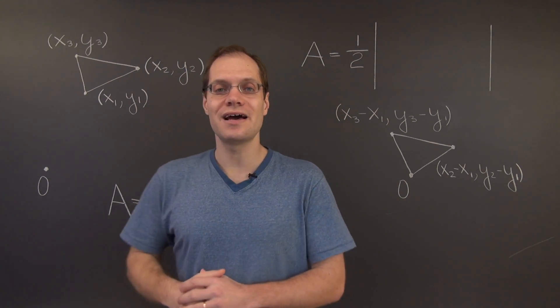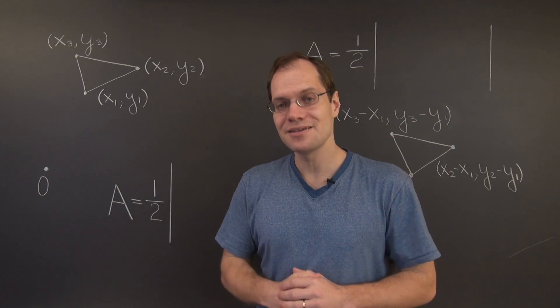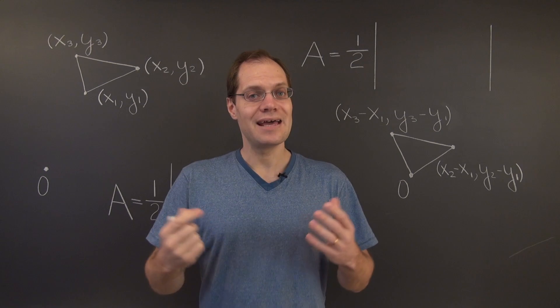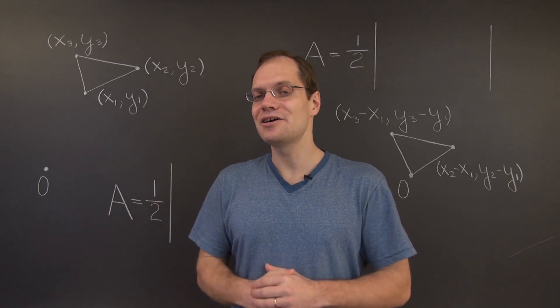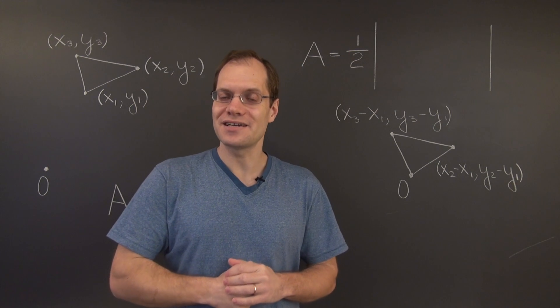Now, I won't draw any of that because it will make the picture too messy, but that's what you should visualize at least initially. And now the question is, what's the area of the triangle given by the tips of three vectors in the plane?